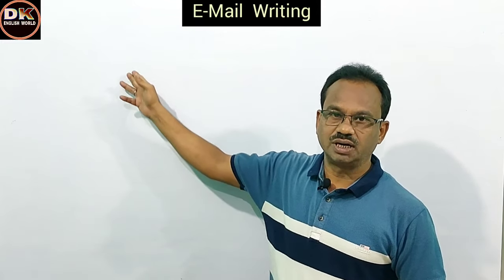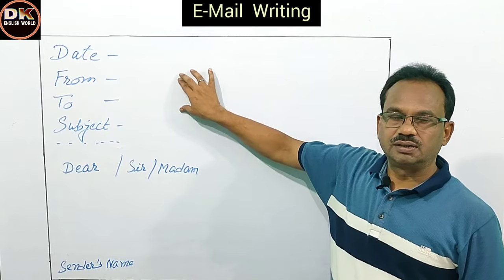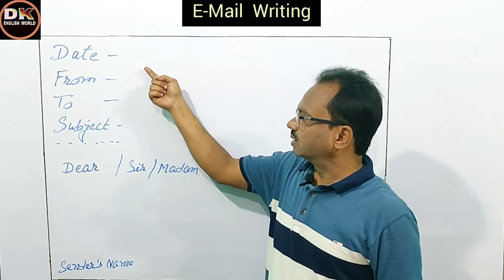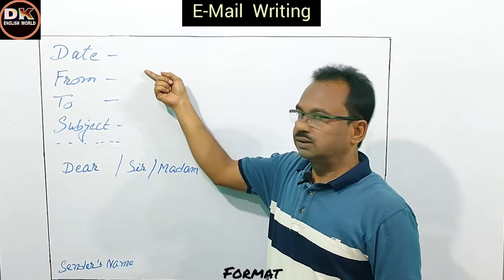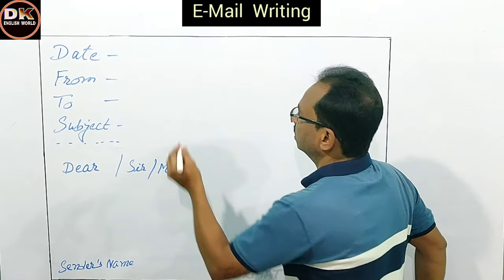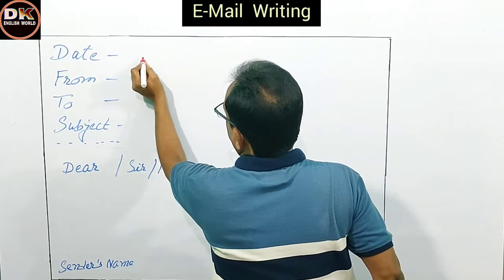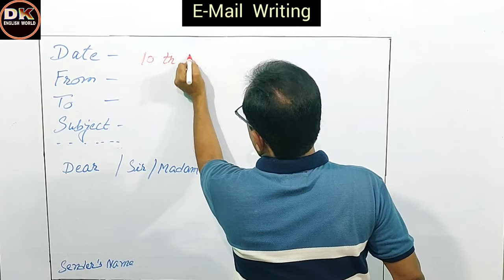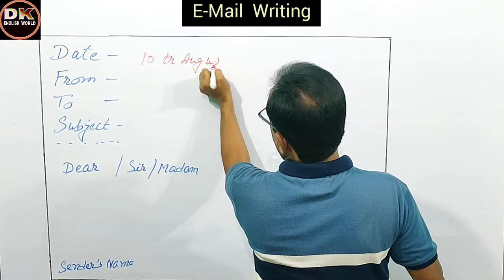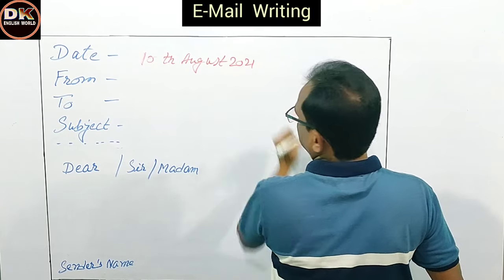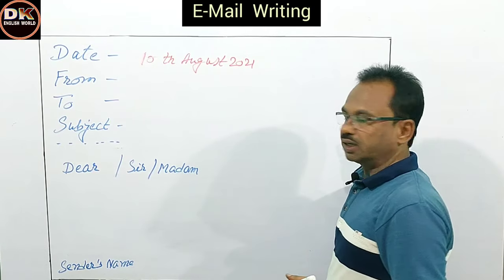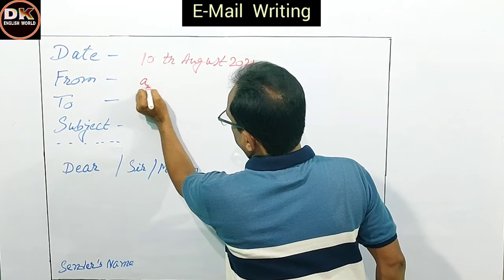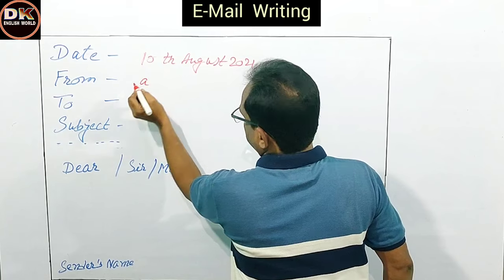I am very sure after going through this video you will be able to write email very perfectly. So let us see the format first. Here is a simple format of email writing. Aap dekh sakte ho — systematically maine points ko likha hai. Aap mein isse clear karne waala ho. Supposed date hai, to aap koi bhi date daalte ho — 10th August. From: sender's email id — aapko likhne padenge.